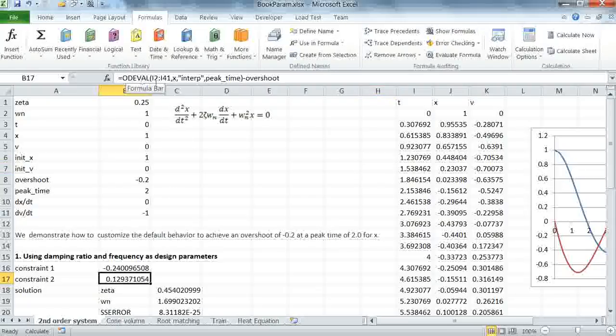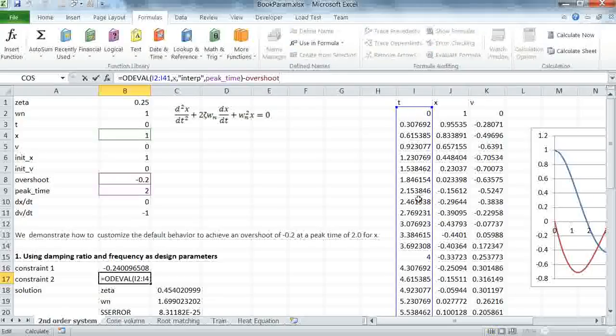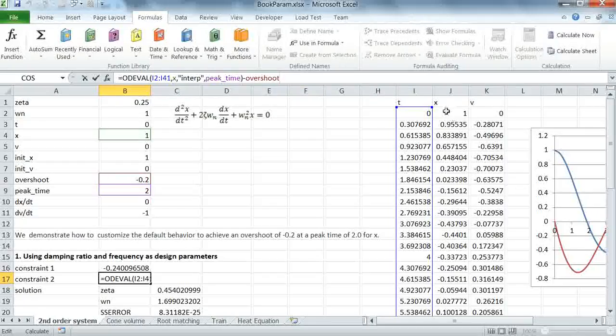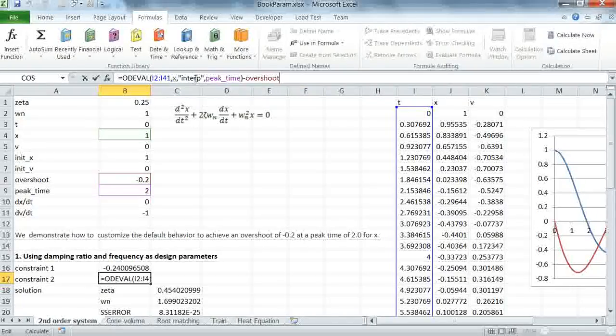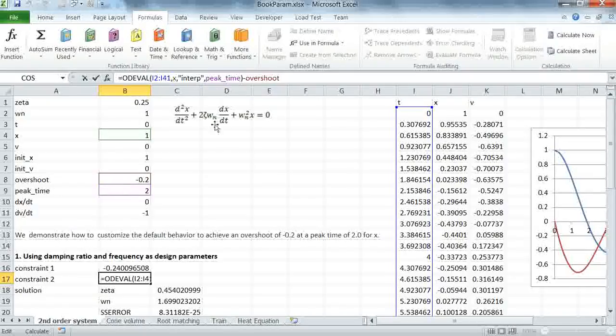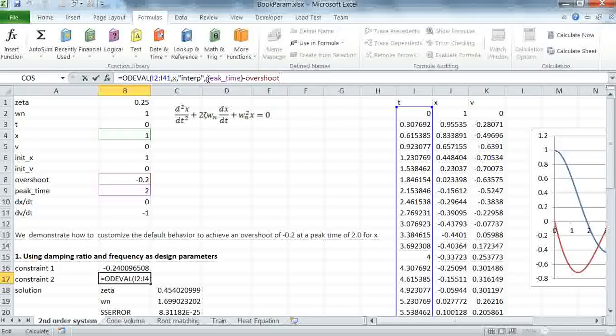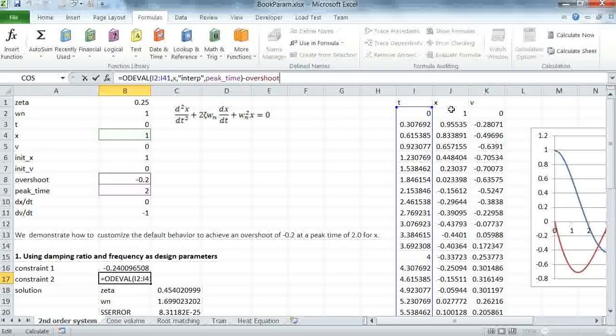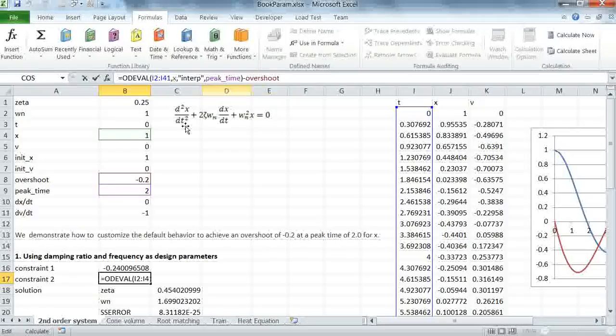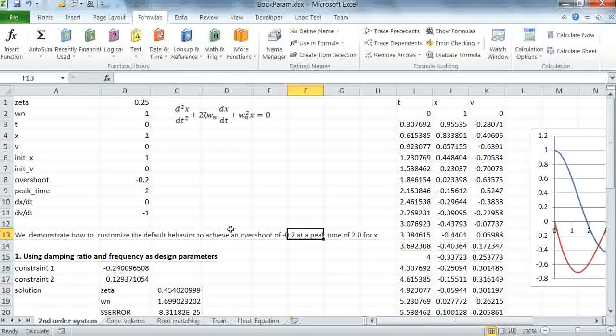I'm using ODEval. I'm using the operation interpolation. As you can see, the first argument for ODEval is the free variable t. The second argument is x, which is my variable of interest. My operation is interpolation, and the value of interpolation is peak time, which is defined here as 2. I could also pass a constant 2 here. So this ODEval will compute the displacement at t equal to 2. I want to drive this constraint to zero because I want the displacement at the peak time of 2 to be exactly minus 0.2.